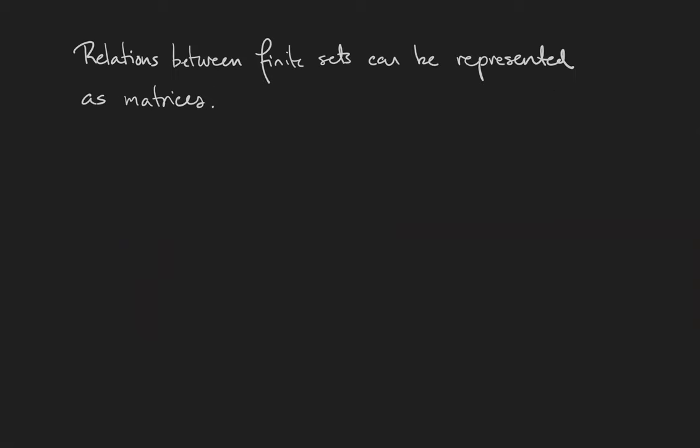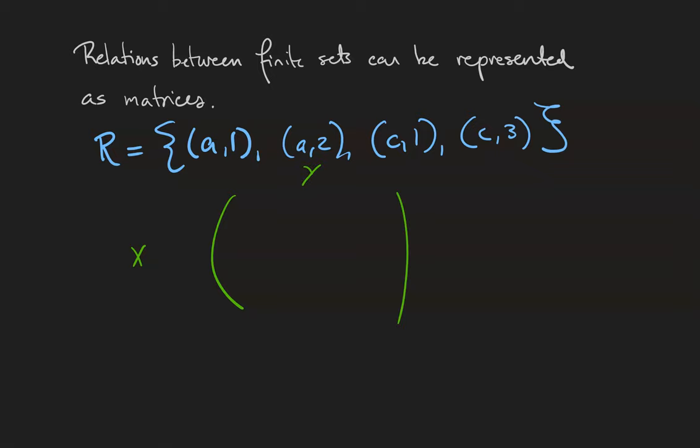The reason we spent all those videos talking about matrices is because matrices are a powerful tool to help us understand relations between finite sets. Take our relation from the last example: (A,1), (A,2), (C,1), and (C,3). The rows of our matrix correspond to the elements of the domain of the relation, in this case the set X, and the columns correspond to the elements of the co-domain, which was Y.